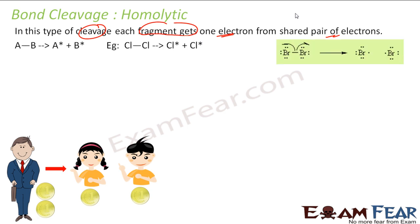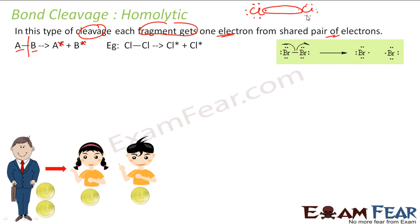For example, if A and B are two atoms that have formed a bond, when they break, each gets one electron. In the case of chlorine — chlorine has 7 electrons, they form a covalent bond, each assuming it has 8 electrons. When the bond breaks in homolytic cleavage, each chlorine gets one electron back from the shared pair. This is a fair distribution — each fragment gets one electron each.